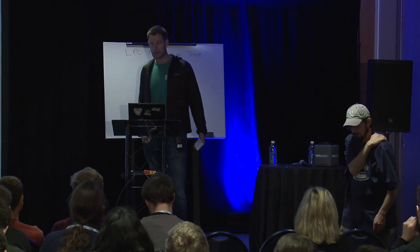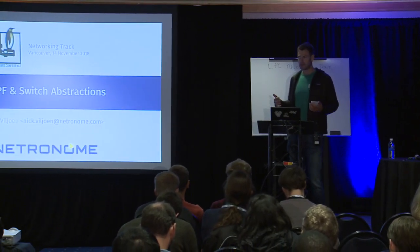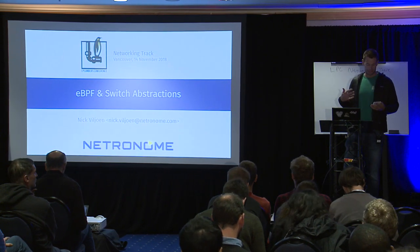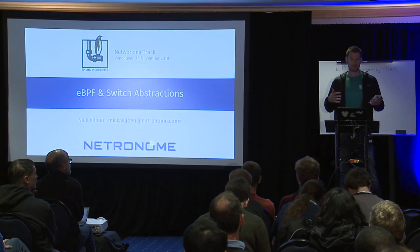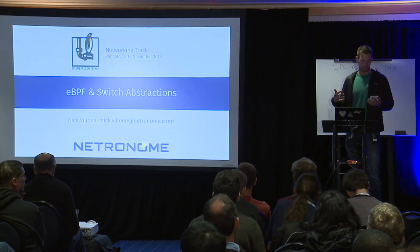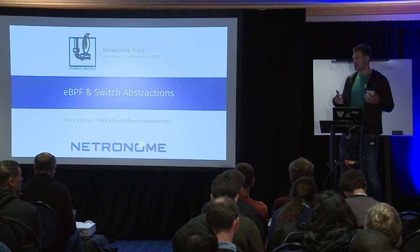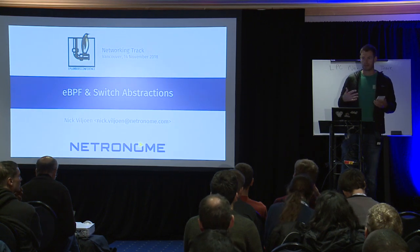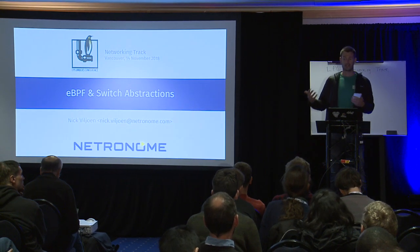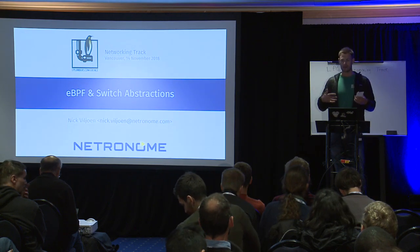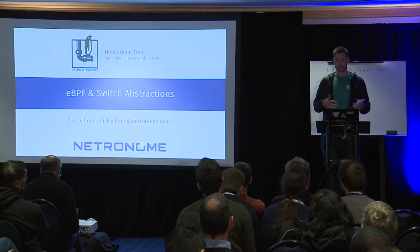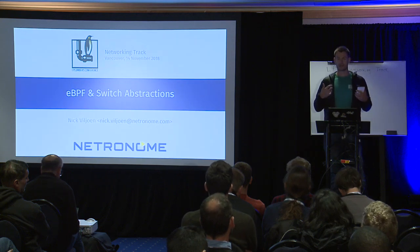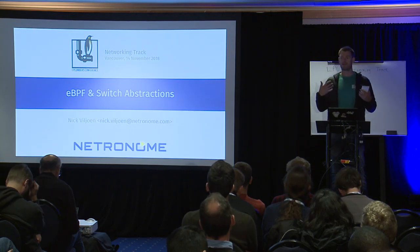I'm going to talk about eBPF and switch abstractions. That's actually quite an abstract title, but what I'm looking to do is basically propose a path whereby we have a flexible eBPF-defined data path for switching in Linux. This is very similar to things like what Will was talking about, but his focus was really on x86. What we're going to be talking about more is heterogeneous processing — how you can use Linux to basically control other elements, whether switch chips or in our case a network processor on the NIC.